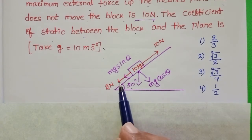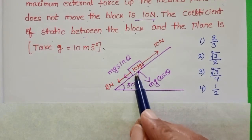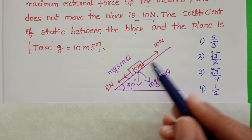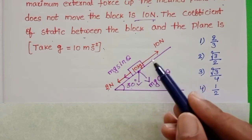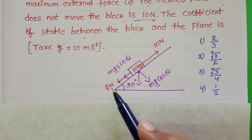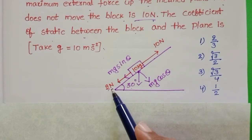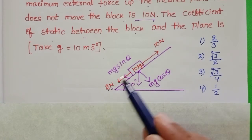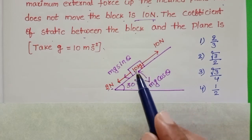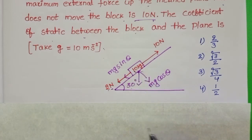Initially, 2 newtons of force is applied on the block to achieve the equilibrium position. These two forces are not applied at the same time — the initial force is 2 newtons. When 2 newtons of force is applied on the block, the block is at equilibrium.